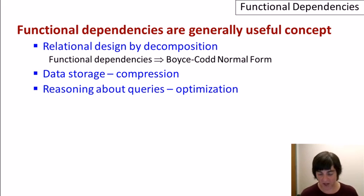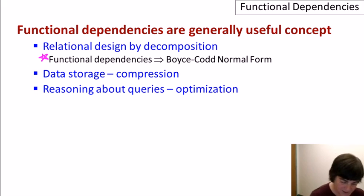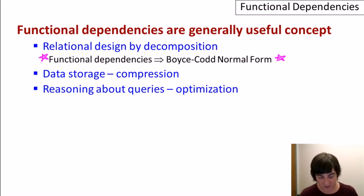So to conclude, functional dependencies are a generally useful concept in database systems. They're a key ingredient of doing relational design by decomposition because we use the functional dependencies to get Boyce-Codd normal form, which is what we'll cover in the next video. But they're also useful for the system to determine how to store data, to compress data, and also to reason about query processing.